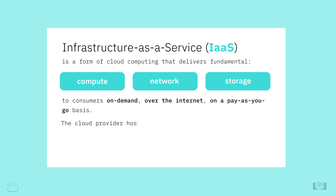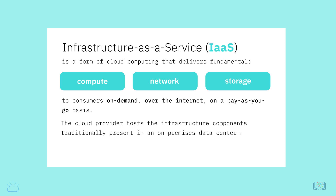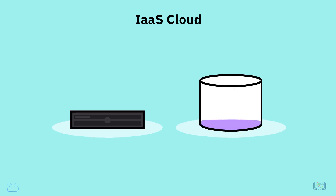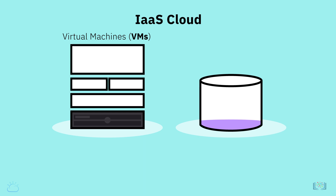The cloud provider hosts the infrastructure components traditionally present in an on-premises data center as well as the virtualization or hypervisor layer. In an IaaS cloud environment, customers can create or provision virtual machines, or VMs, in their choice of region and zone available from the cloud provider.